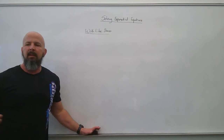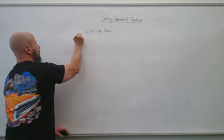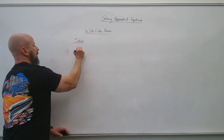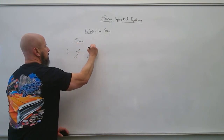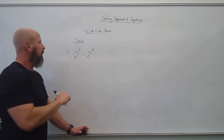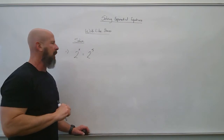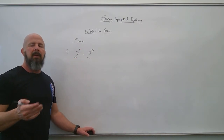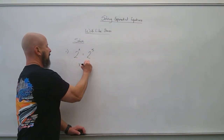First off, let's take a look at the like bases. Here's the most basic exponential equation: 2 to the x equals 2 to the fifth. If the bases are the same, that means the exponents have to be the same. If x wasn't 5, this wouldn't be a true statement — 2 to the fifth is only going to equal 2 to the fifth. So x would have to equal 5.